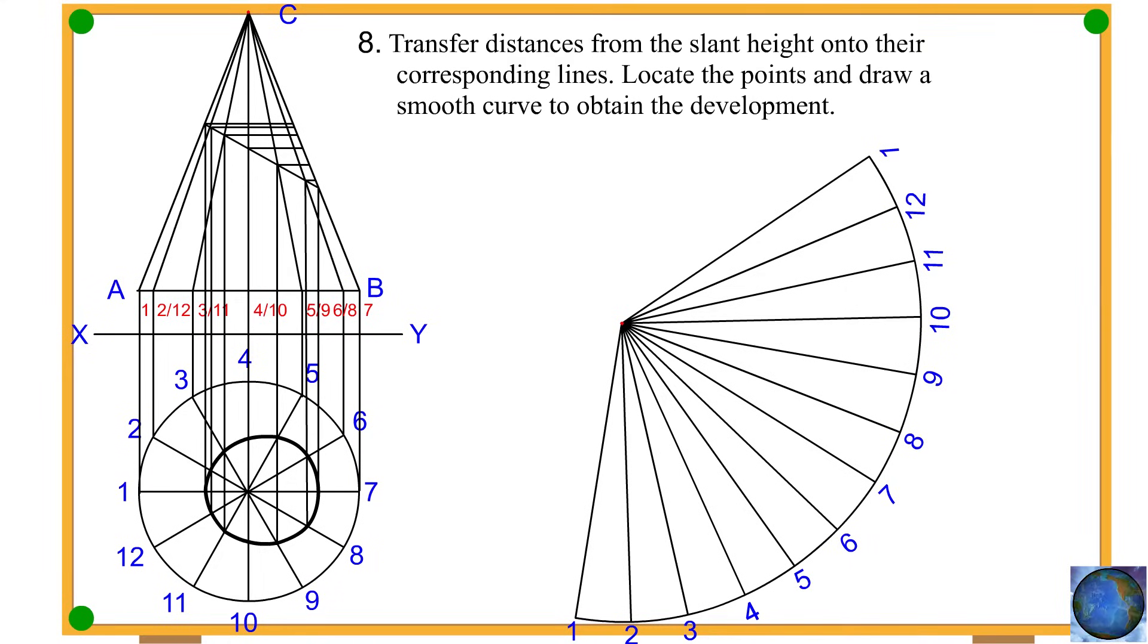Procedure 8: Transfer distances from the slant height onto their corresponding lines. Locate the points and draw a smooth curve to obtain the development.